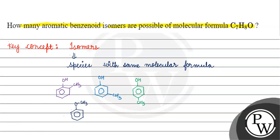We will talk about the benzenoid isomers. Then we have five hydrogens. Looking at the carbons: five, six, seven carbons, and hydrogens: three, four, five, six, seven, eight hydrogens. So the molecular formula is C7H8O. The properties of these isomers are quite different — like we have an ether, we have a phenol, we have a benzyl alcohol.